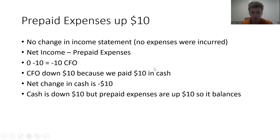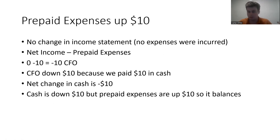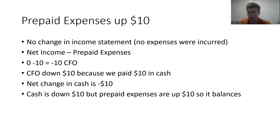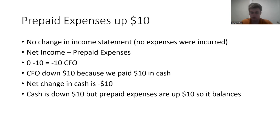Example: prepaid expenses goes up by $10. There's no change to the income statement because these expenses haven't actually been incurred yet. In the formula it's net income minus prepaid expenses: zero minus $10, so cash flow from operations is negative $10. This makes sense — I'm just paying $10 in cash, so $10 is leaving my pocket. On the balance sheet, cash is down $10 but prepaid expenses are up $10, so one asset is down and one is up — net zero change in assets, with liabilities and shareholders' equity unaffected. It balances.